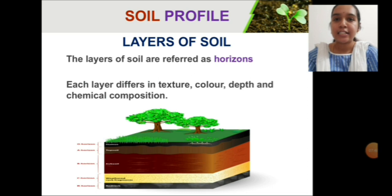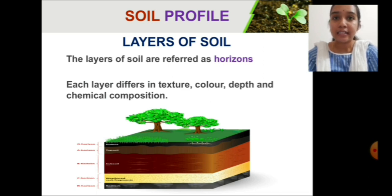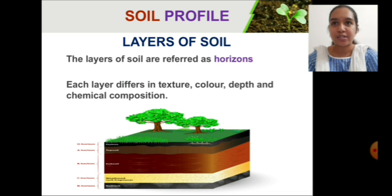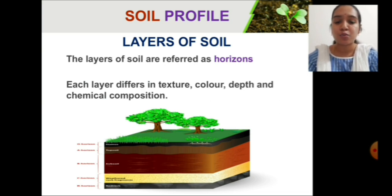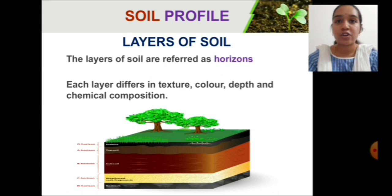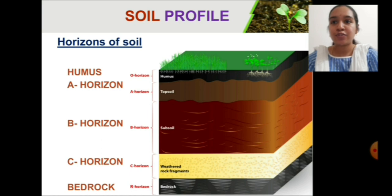Now let us study the different layers of soil as we have understood through the activity. On the whole, how has the earth's crust been divided into different layers of soil? These layers of soil are called horizons, and each horizon differs in its texture — that means how it feels when you touch it; it can be soft, hard, rocky, or sandy. These layers also differ in color, depth — each layer is not of equal depth — and chemical composition. Here is an image for your clear understanding showing all the different layers of soil.